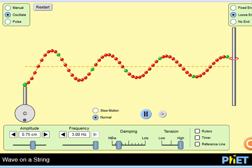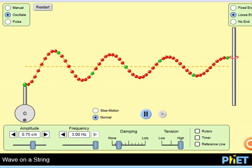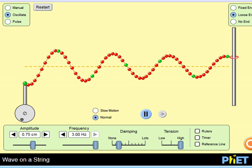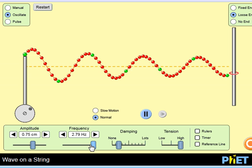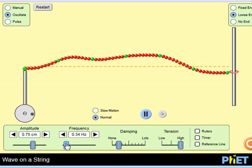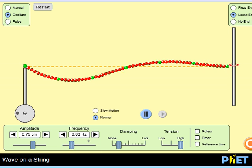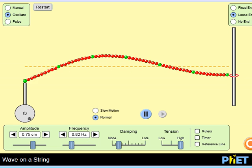When we increase the frequency, we should see that the wavelengths should decrease. If we decrease the frequency, wavelengths should get longer, meaning that there is fewer waves per second.